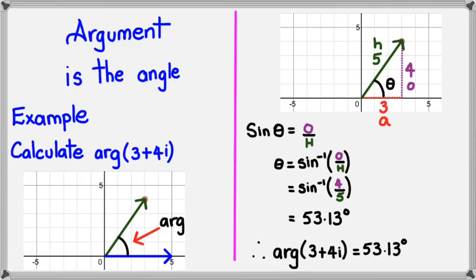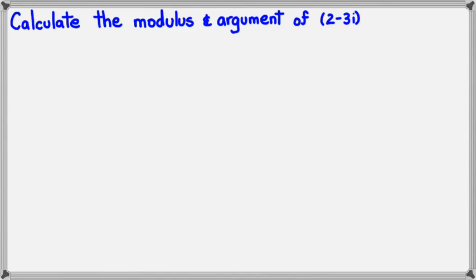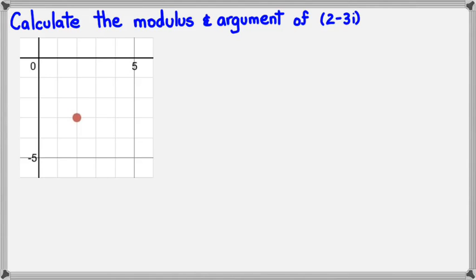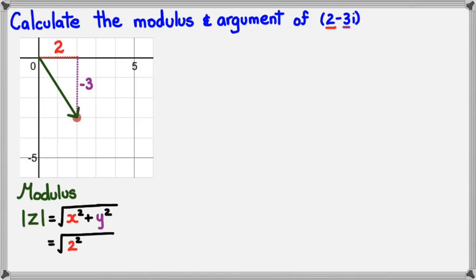In this example, I want to calculate the modulus and argument of 2 minus 3i. So the first thing I'm going to do is plot it. And I know on the x-axis it's 2, and on the y-axis it's minus 3, because that's the imaginary part of the number. And the modulus is facing downwards. So if I was to calculate the modulus, I've got modulus of z is equal to square root of x squared plus y squared. That's 2 squared plus negative 3 squared. And that's equal to square root of 13.